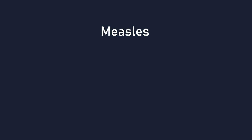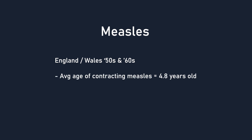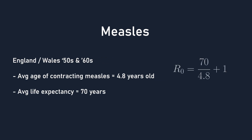We can also look at the real life example of measles again. During the 1950s and 60s in England and Wales, the average age of contracting measles was 4.8 years old, and the average life expectancy was around 70 years old. 70 divided by 4.8 plus 1 is around 15.6, which is relatively close to the aforementioned R0 value of 14.4 that was observed in Great Britain.